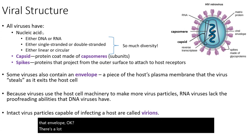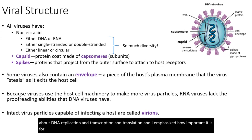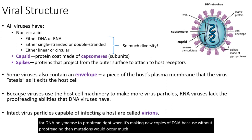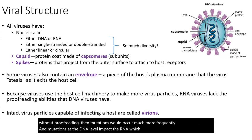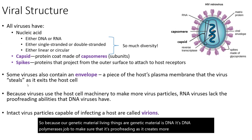Now there's a lot of diversity, as you can tell. We've already talked about DNA replication, transcription, and translation, and I emphasized how important it is for DNA polymerase to proofread when making new copies of DNA. Without proofreading, mutations would occur much more frequently. Mutations at the DNA level impact the RNA, which can impact the proteins that are supposed to be made.